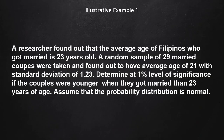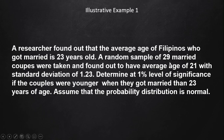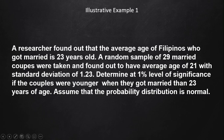Let's start with an illustrative example. A researcher found that the average age of Filipinos who got married is 23 years old. A random sample of 29 married couples was taken and found to have an average age of 21. Their standard deviation is 1.23 — that comes from the sample, not the population. We will use a one percent level of significance.